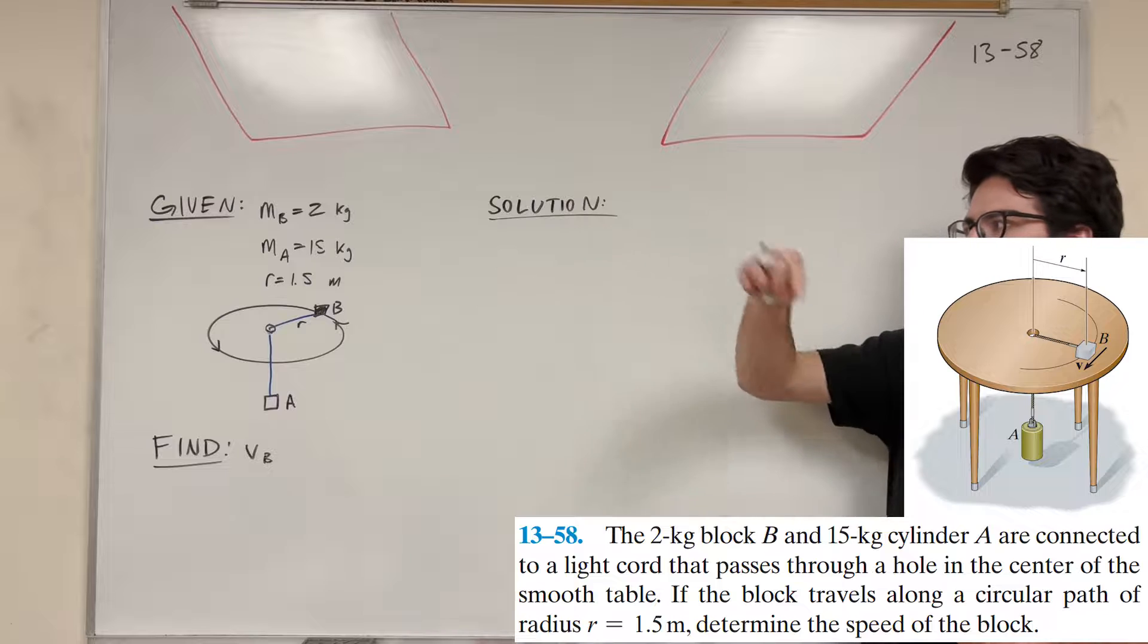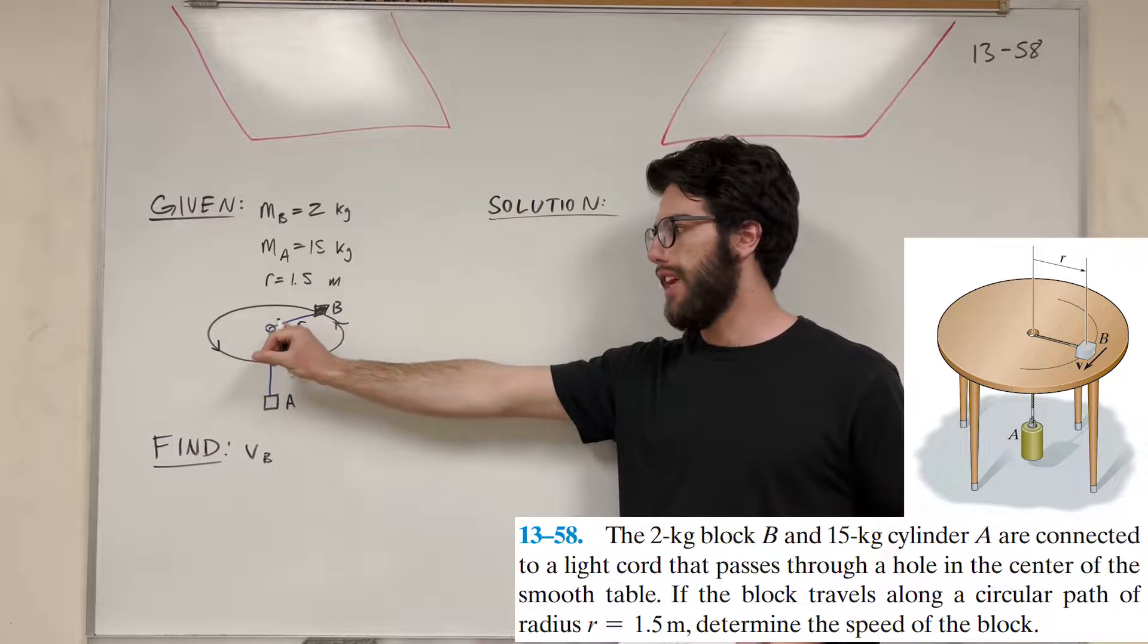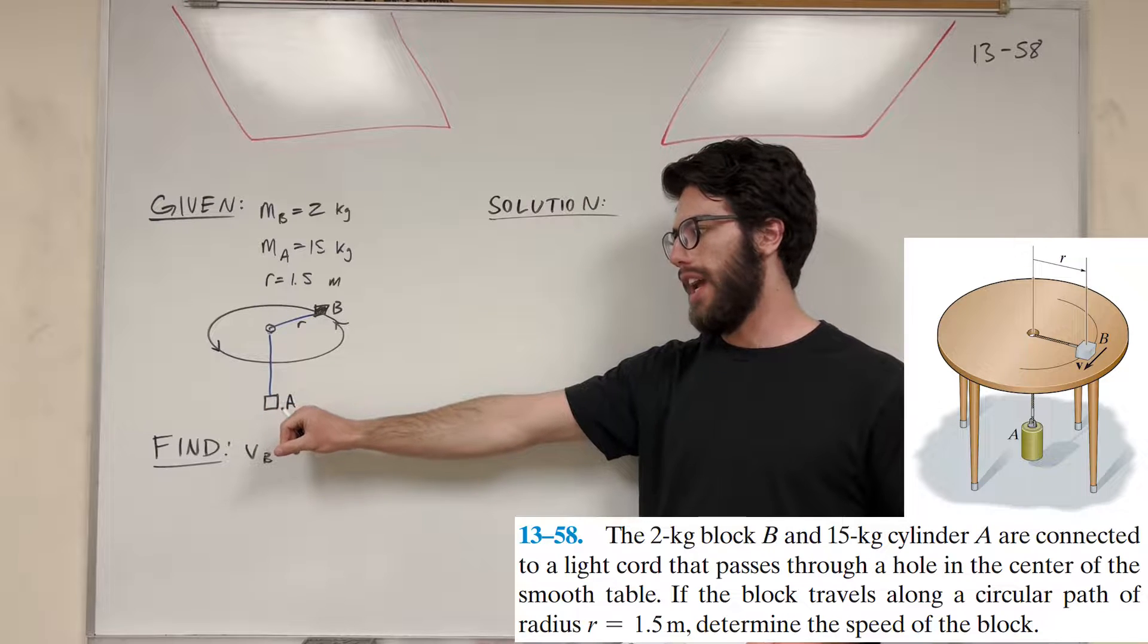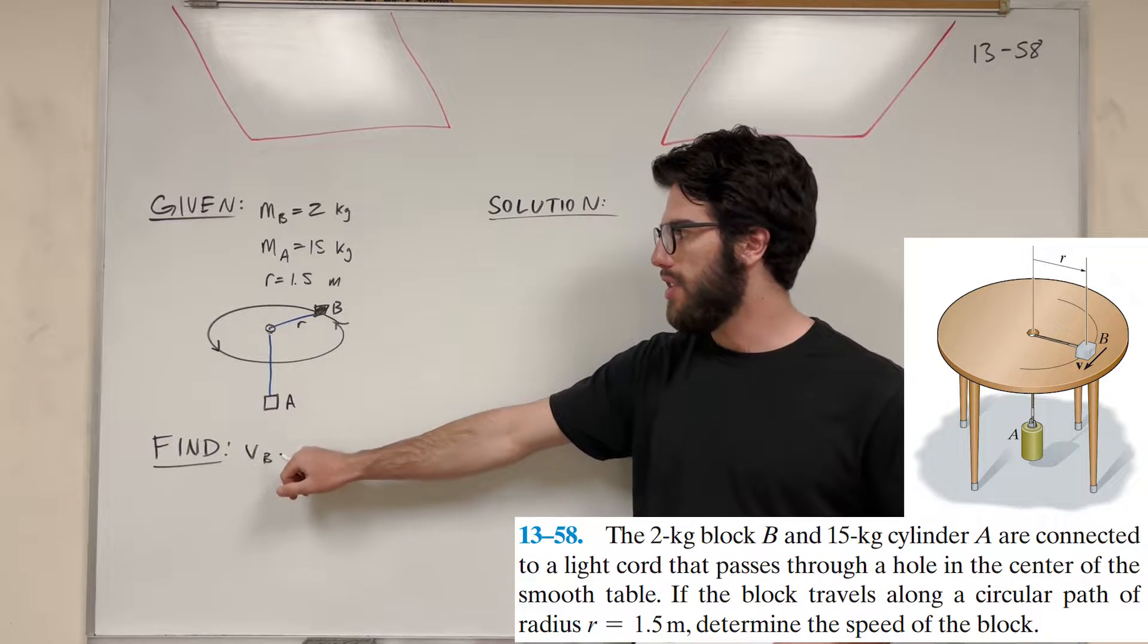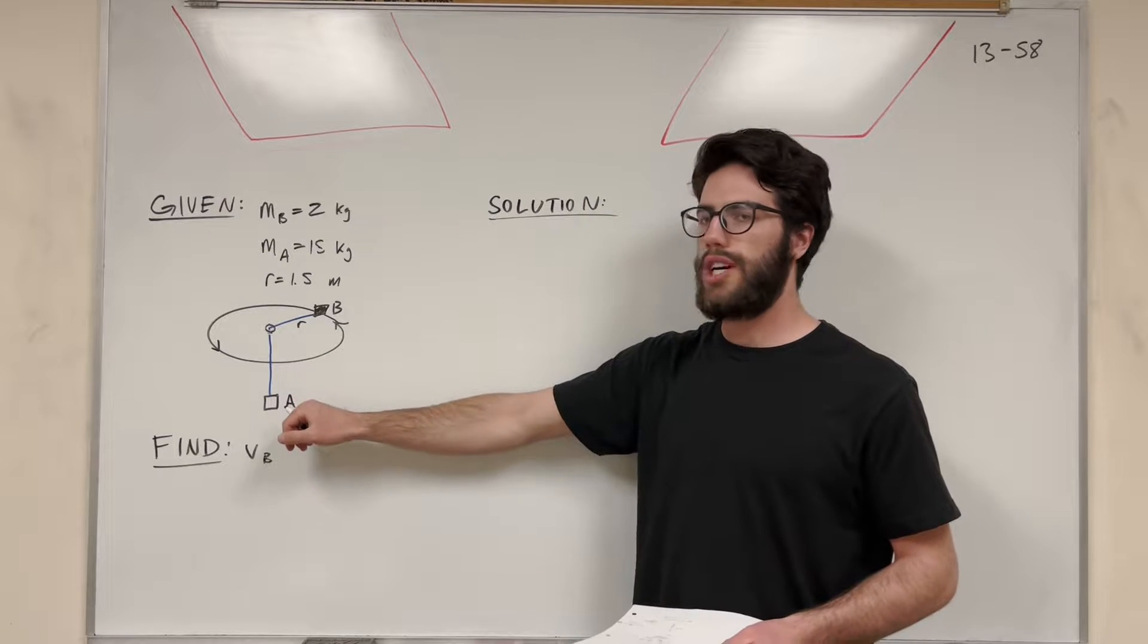We have these two blocks, one of them is spinning in a circle on a table, and it's attached to this rope that goes through the center of the table, and it's lifting up block A. So we need to find that the velocity of this block B needs to travel in this circle in order to hold up block A.